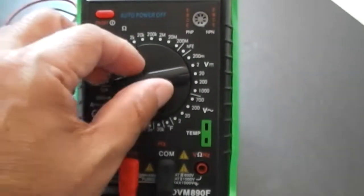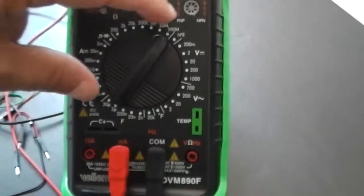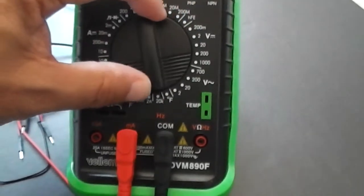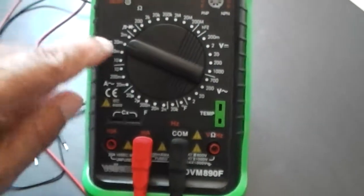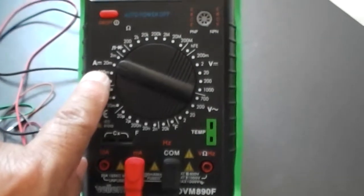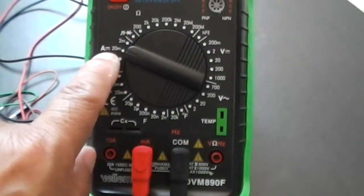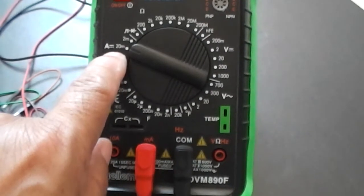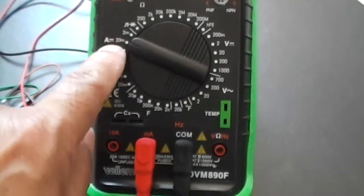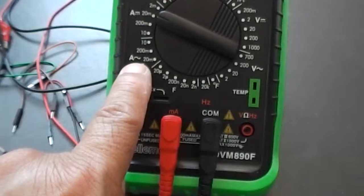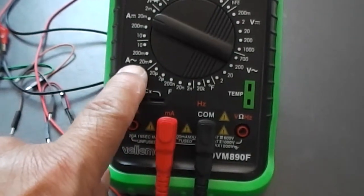And then on the range setting, I need to go ahead and go to milliamps, but DC. And that's over here in this area, at least on this particular meter. And you can see that it has an A then with a solid line and then three dash lines underneath. But that is for DC, as opposed to this one, which it has a sine wave, which is for AC.